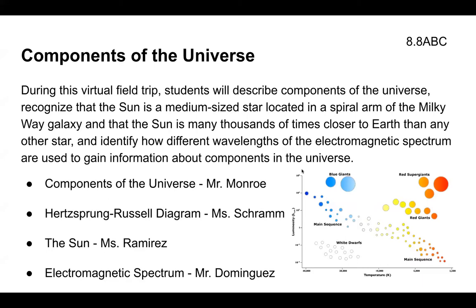This afternoon's virtual field trip is going to be about the components of the universe. During this virtual field trip, students will describe components of the universe, recognize that the sun is a medium-sized star located in a spiral arm of the Milky Way galaxy, and that the sun is many thousands of times closer to Earth than any other star, and identify how different wavelengths of the electromagnetic spectrum are used to gain information about components in the universe.